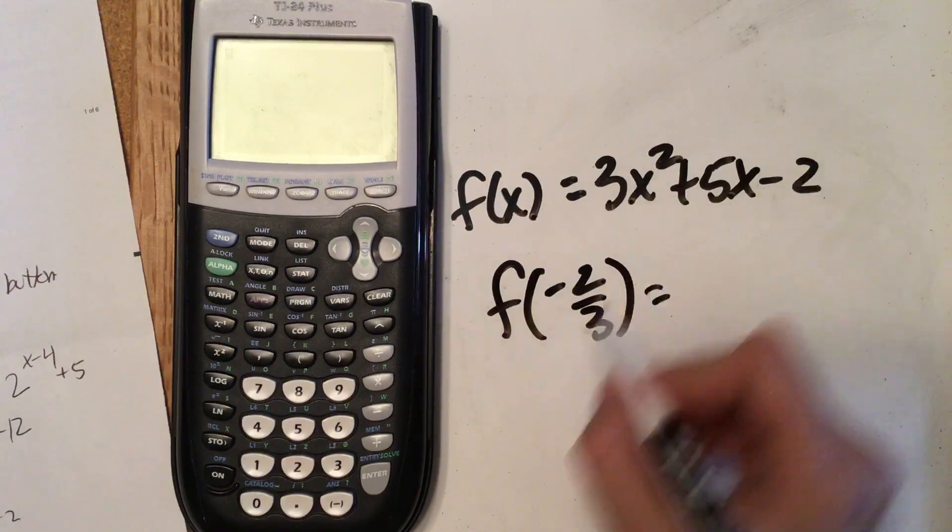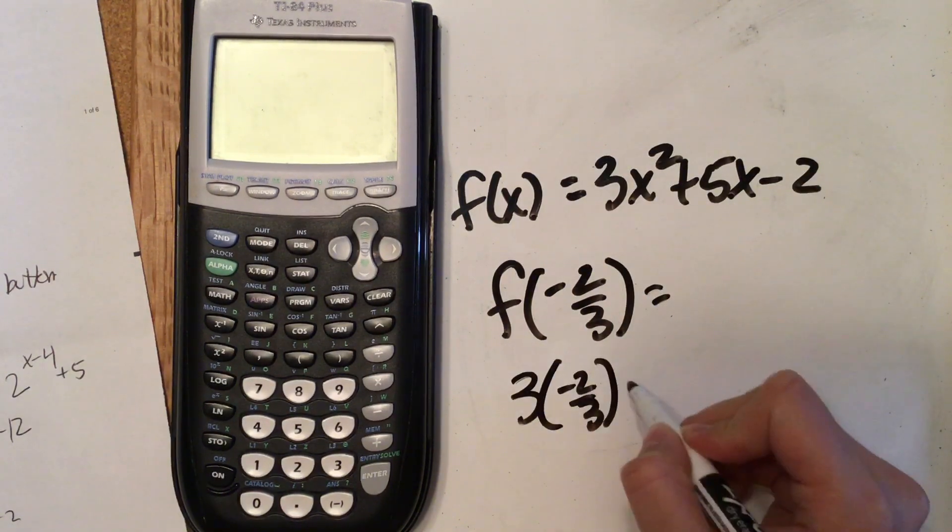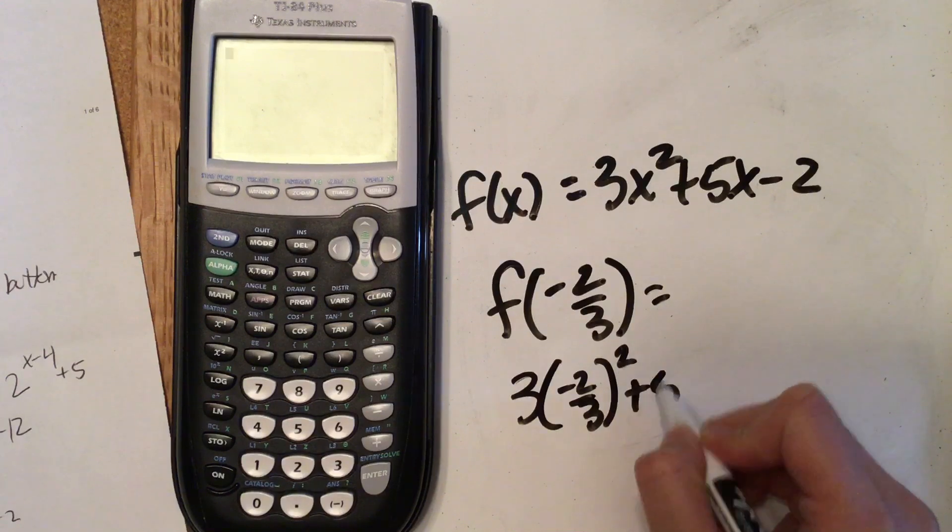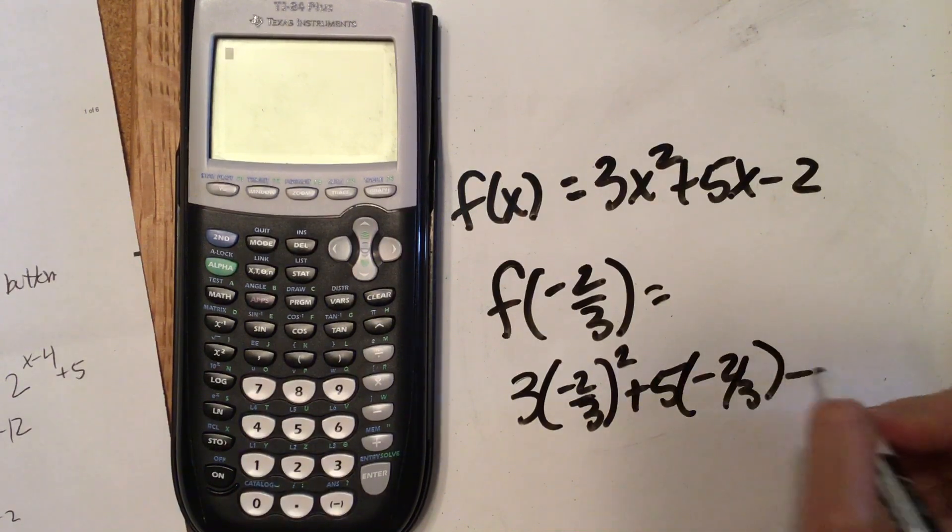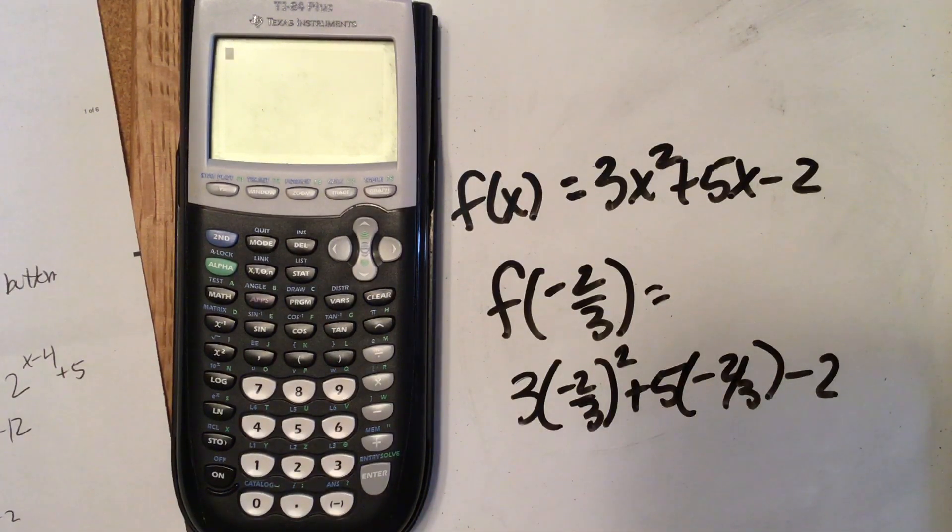well, we know that this really means we're going to plug -2/3 in for each x value. But writing -2/3 in your calculator is time consuming because it's three buttons instead of just one, which would be nice.